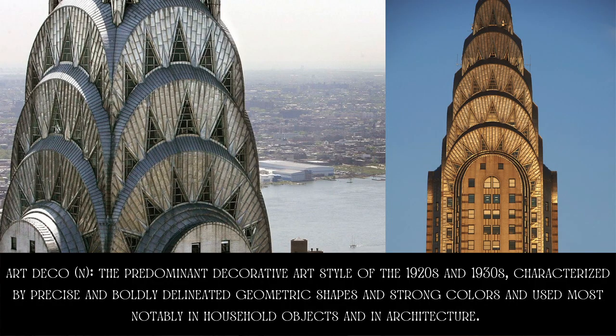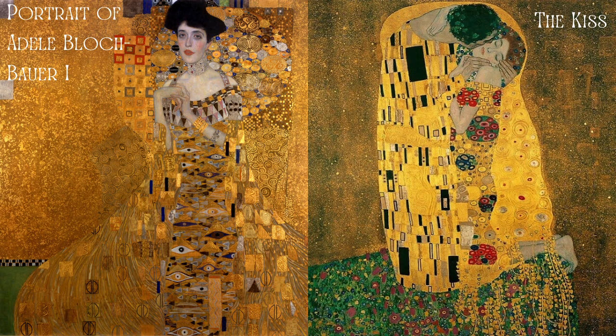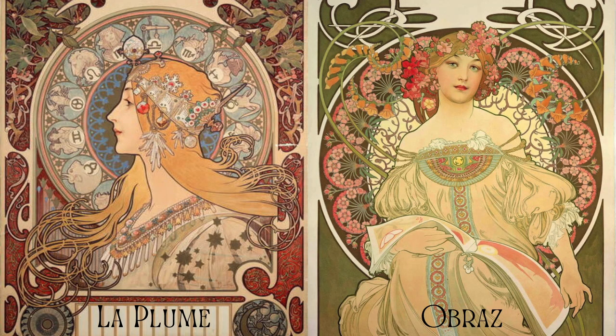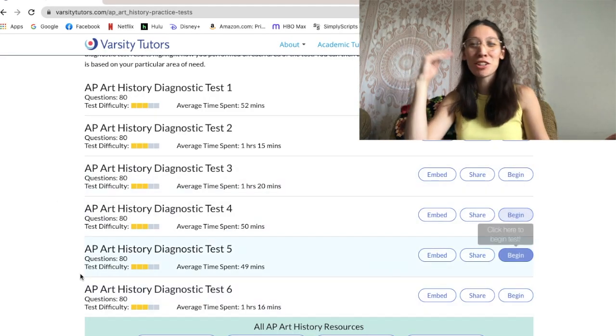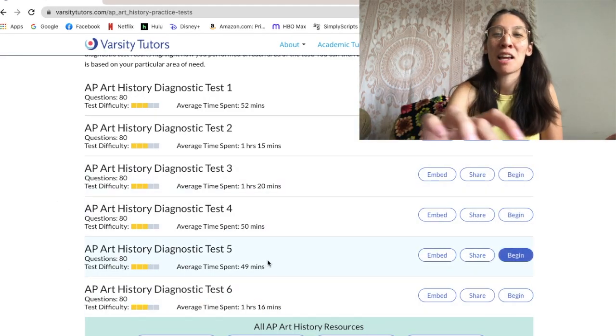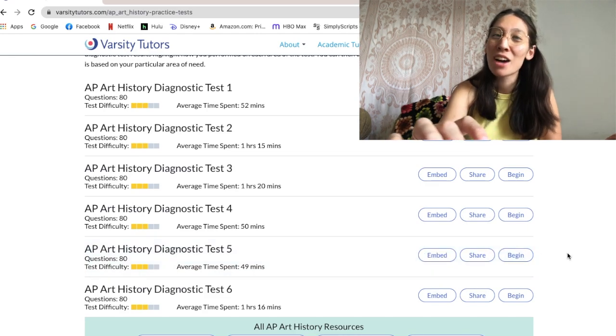I'm really into Art Deco, which is like 1920s architecture styles. My favorite artist is Gustav Klimt — he did The Kiss, the most famous painting. I also really love Alphonse Mucha, who was a Czech artist. They were both around the turn of the century, 18th to 19th century. I just Googled art history tests and this site came up, so I'm going to be doing AP Art History Diagnostic Test 5.